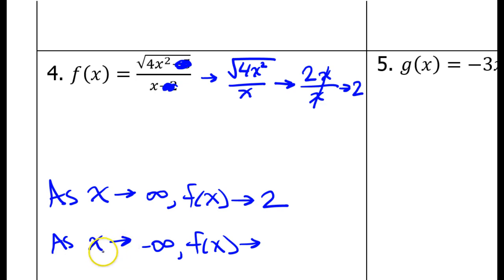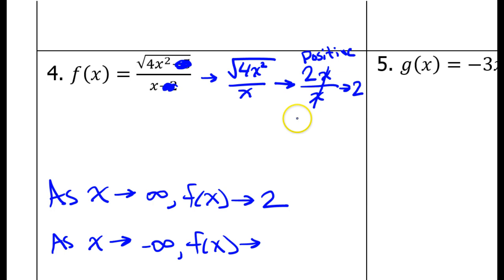Now, how will the analysis change when x values are approaching negative infinity? The numerator won't change at all because even if this x value is negative, we're squaring it, so it's going to turn positive anyway. This is still going to be a positive under the radical, so we're still going to get 2x, which is positive. The only thing that's going to change is the x value in the denominator is now going to be negative, because there's no squaring that's going to turn it positive. So now we have a positive divided by a negative. The x values will still cancel out, but the end result is going to be negative 2.